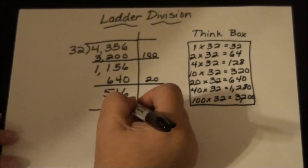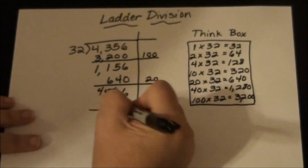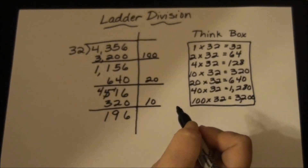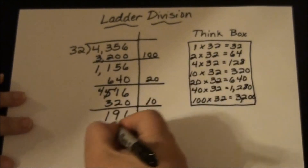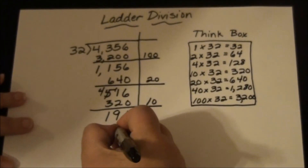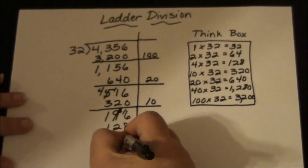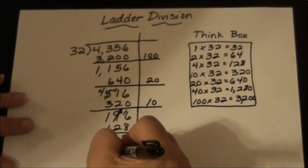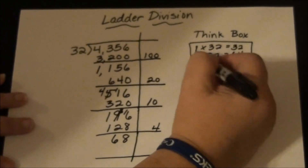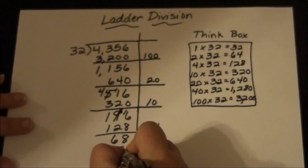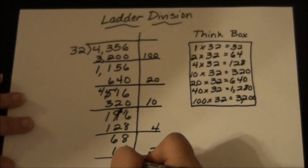After subtracting 320 I get 196. I can't use 320, but I can use 128 — its factor is 4. After subtracting I get 68, and I can still subtract more because I have 64, whose factor is 2. I write 2 and 64 on the ladder. 68 minus 64 is 4, and I can't go any lower, so my remainder is 4.